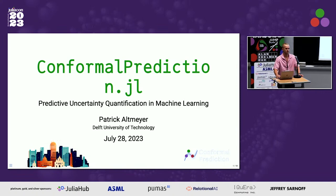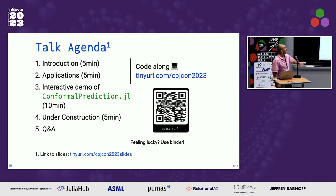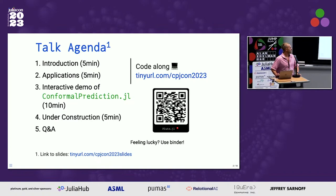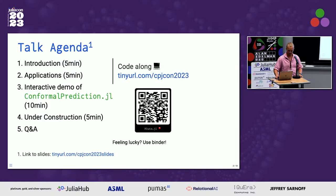I'll talk about something called conformal prediction — a universal way to quantify predictive uncertainty for machine learning models in Julia. There will be a short demo in Pluto; I recommend downloading the notebook to run locally using the link tiny.url.com/CPJcon2023. If you feel particularly daring you can try Binder, but in my experience the Wi-Fi doesn't work so well. If you just want to follow the slides there's an alternative link.